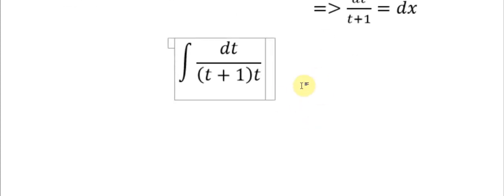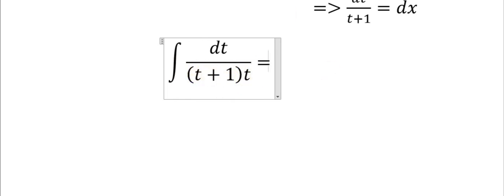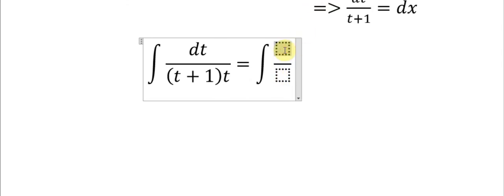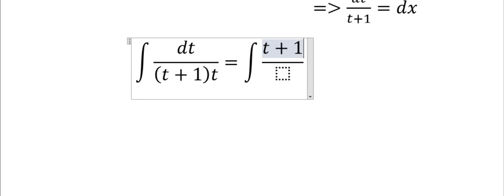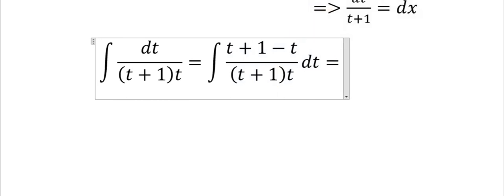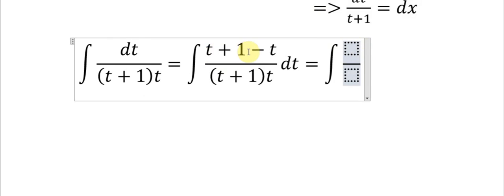The second step is to separate the terms. We have t plus 1 minus t in the numerator, which gives us dt divided by t minus dt divided by t plus 1.